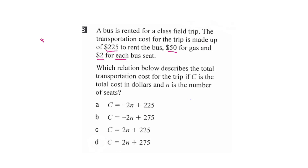There are two components adding up to the initial value: 225 dollars to rent the bus and 50 dollars for gas, giving an initial value of 275 dollars. Then it's 2 dollars per seat, so our answer is C equals 2n plus 275.